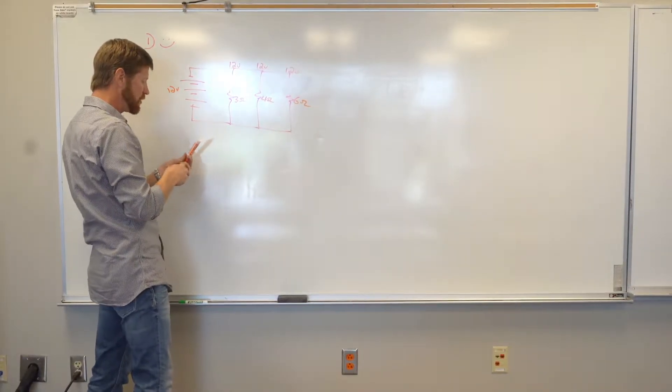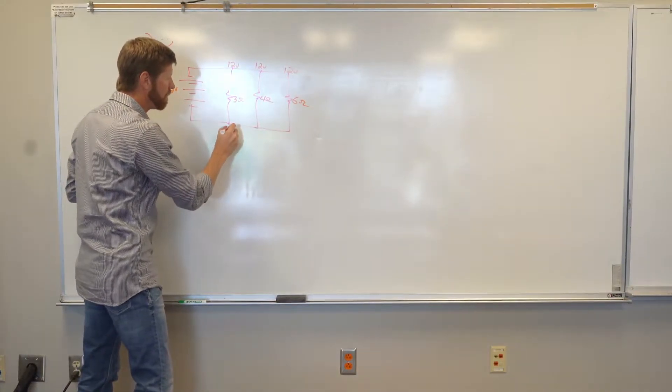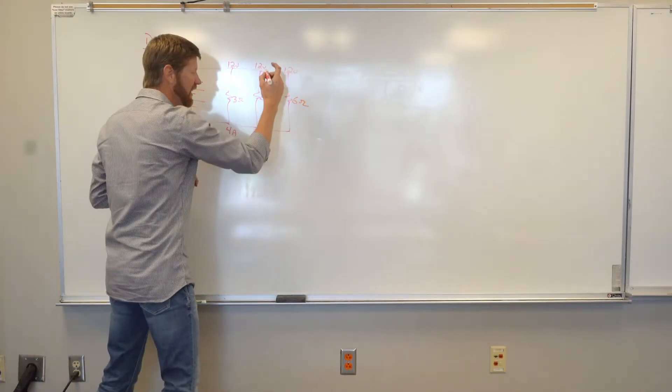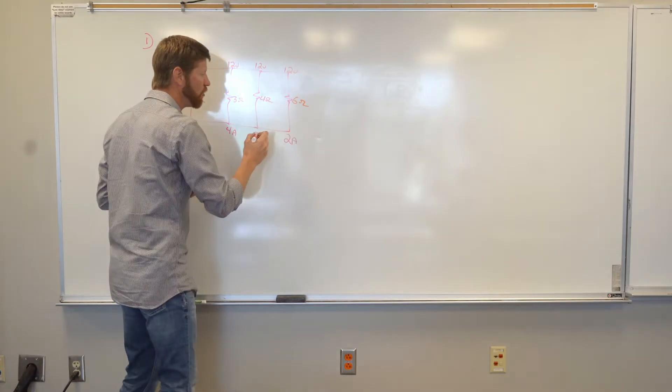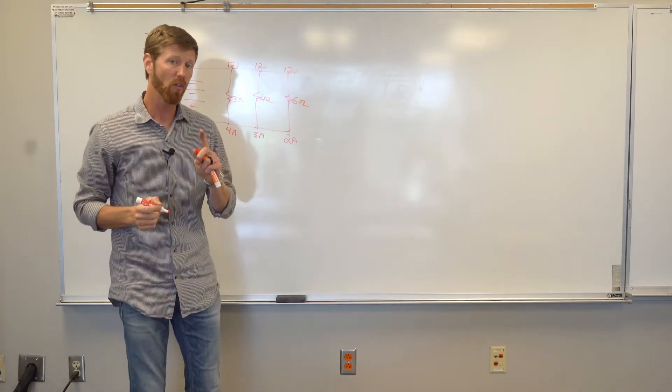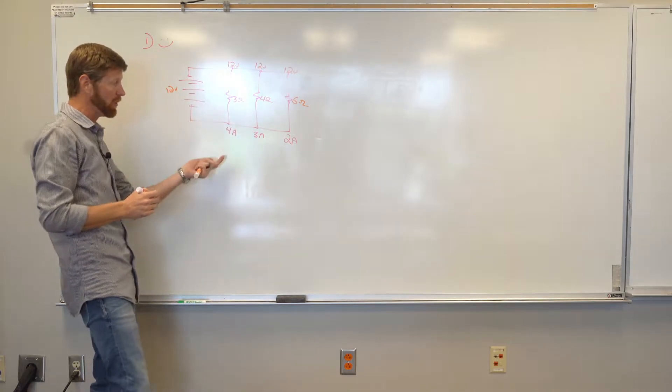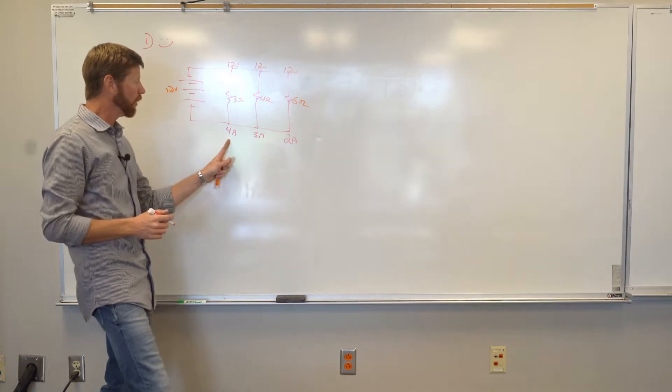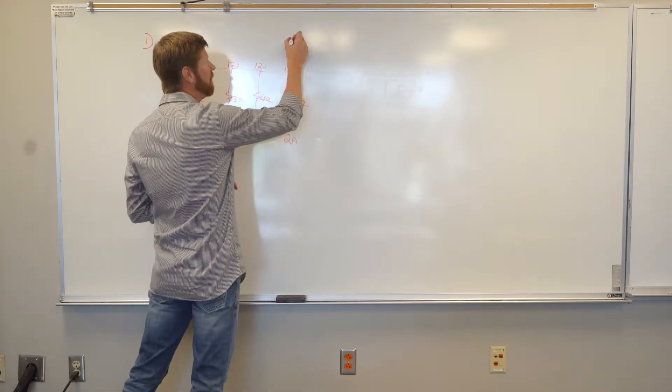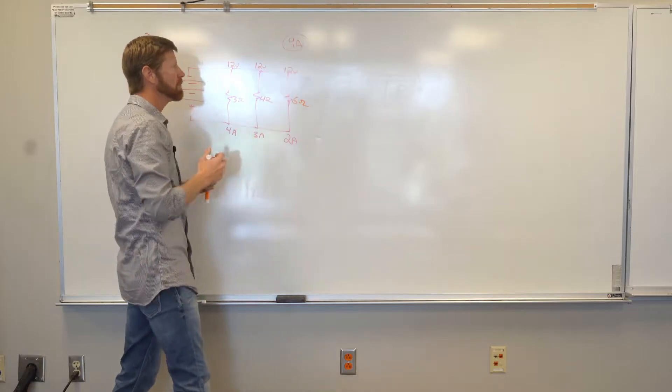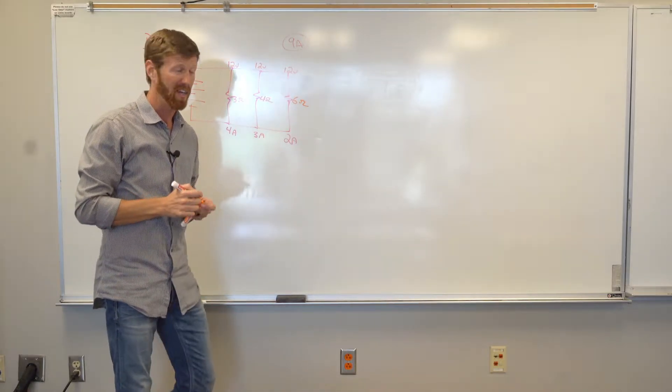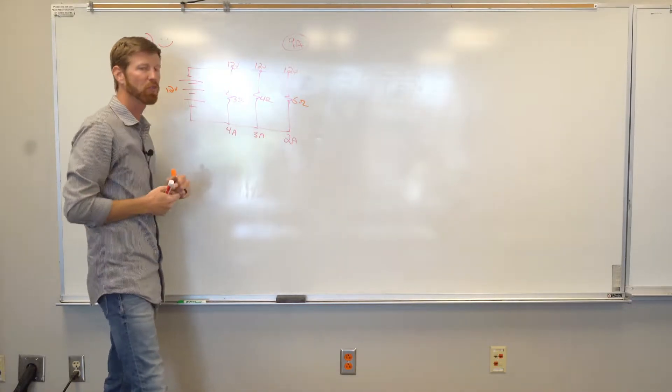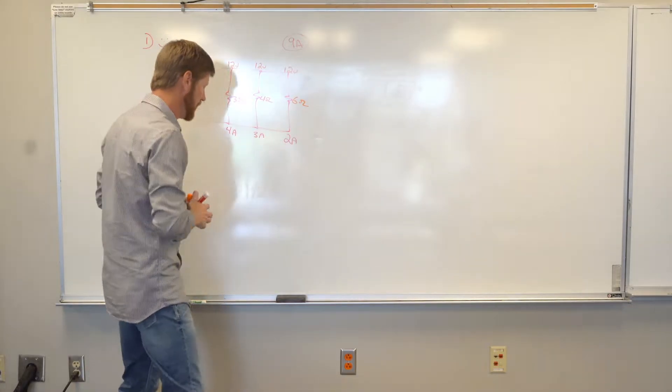Then I can treat these like individual series circuits. What's three divided into 12? That's going to give me four amps. Four into 12 is three amps for this leg. Six into 12 is going to give me two amps for this leg. And the law that relates to amperage in parallel circuits says, how do you get the total amperage? You just add them up. So four plus three plus two, we have nine amps total in this circuit. So again, that's probably my favorite one, just because we can treat these as individual series circuits and add it up.